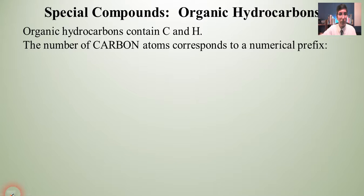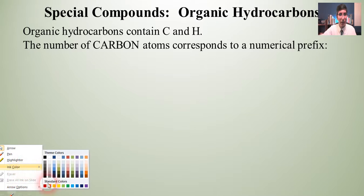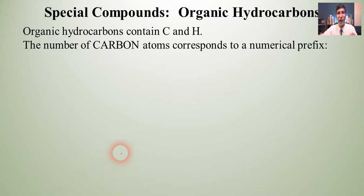We're just going to look at barely scratching the surface at how some of these organic compounds are named. The first thing that we want to realize is that organic hydrocarbons have carbon and hydrogen. That's how we get the name hydrocarbon, hydrogen carbon. And when you look at these compounds, we have numerical prefixes that correspond to the number of carbon atoms.